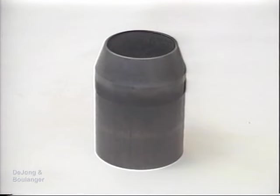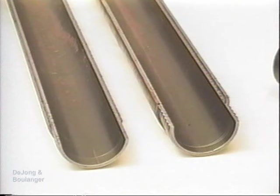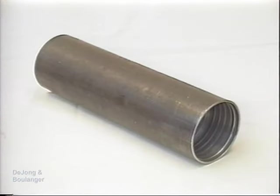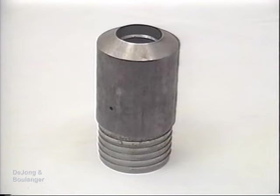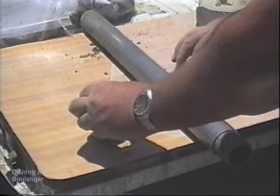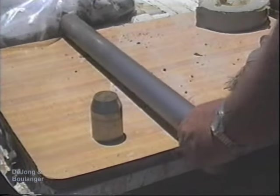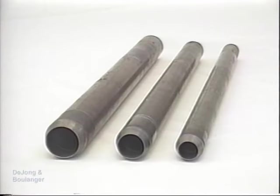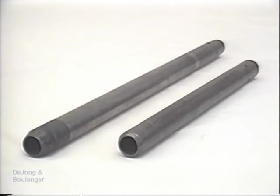The split spoon consists of a barrel shoe, a split barrel or tube, a solid sleeve, and a sampler head. When the sharpened hardened steel shoe and solid steel sleeve are unscrewed, the two halves of the split spoon may be separated and the sample easily removed. Generally, split spoon samplers are available with inside diameters ranging from one and three-eighths inches to four and a half inches, and in standard lengths of 18 inches to 30 inches. The most common in practice is the split spoon sampler with an outside diameter of two inches, an inside diameter of one and three-eighths inches, and a length of 24 inches.